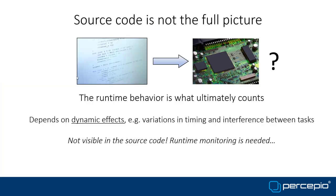What's important to remember is that source code is not the full picture. Runtime behavior is what ultimately counts. Runtime behavior also depends on dynamic effects like variations in timing and interference between tasks — things not visible or even defined in the source code. To get a full picture, you also need runtime monitoring.